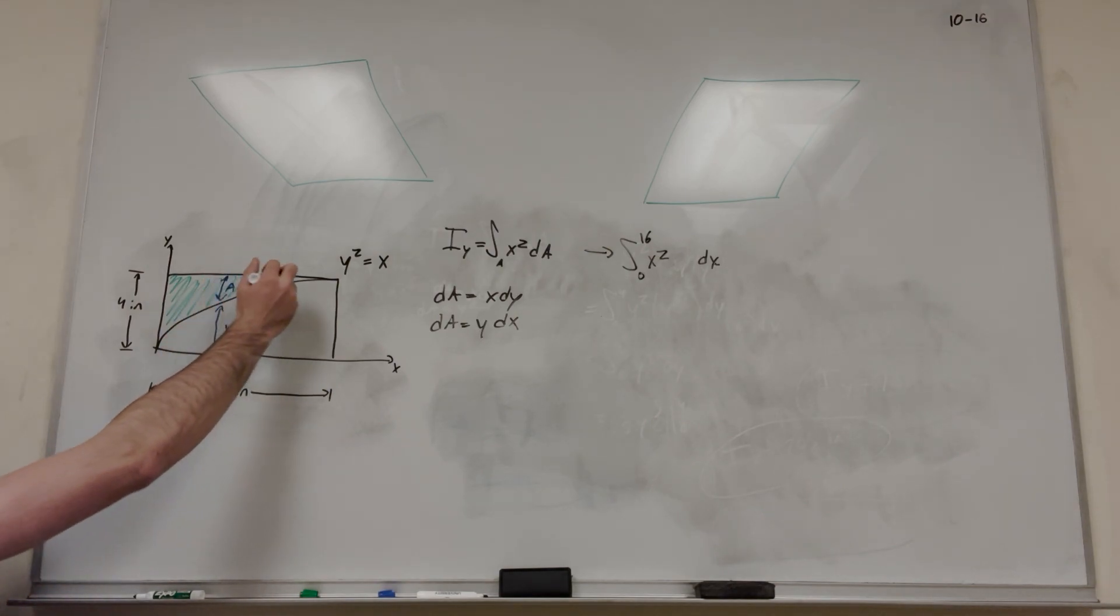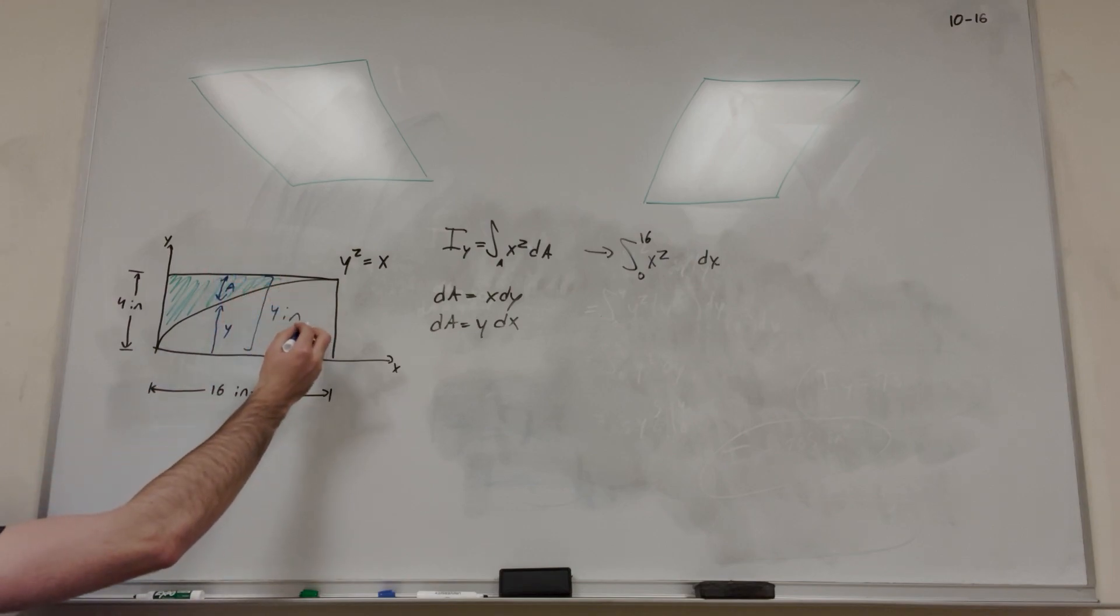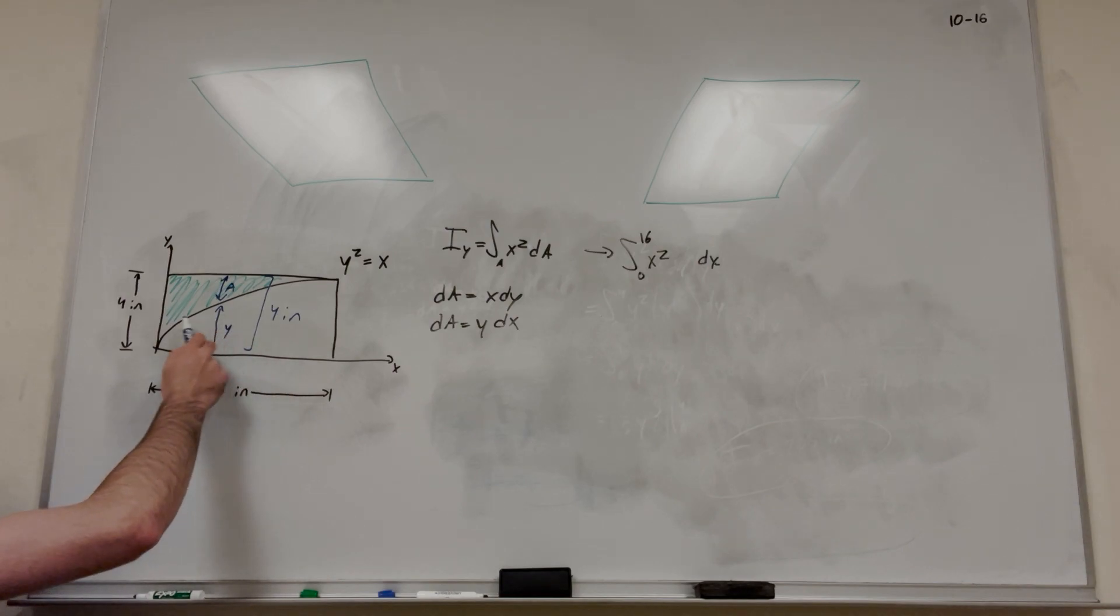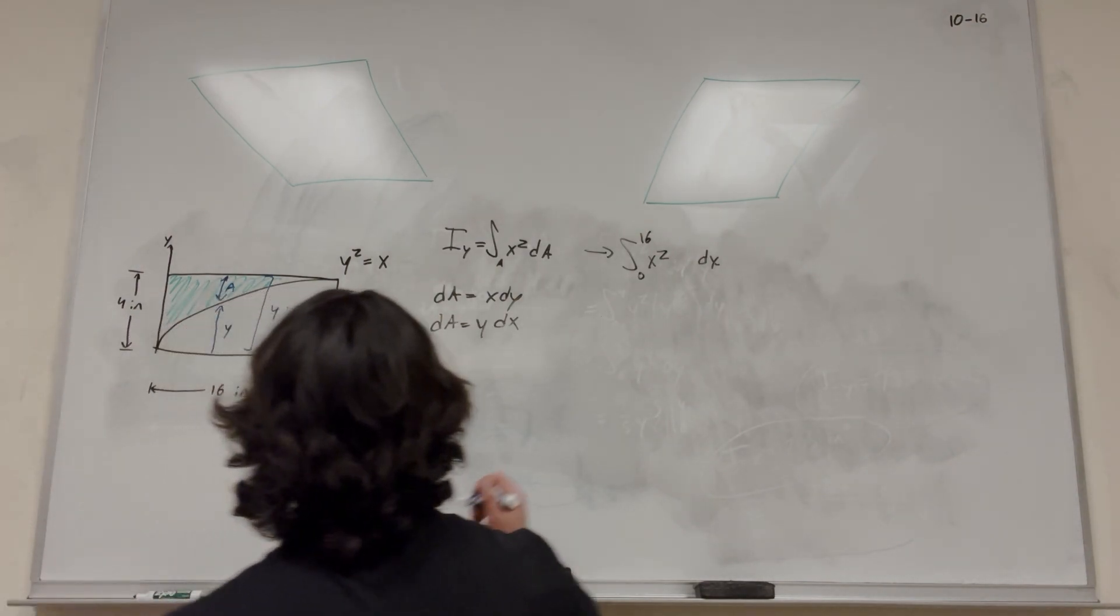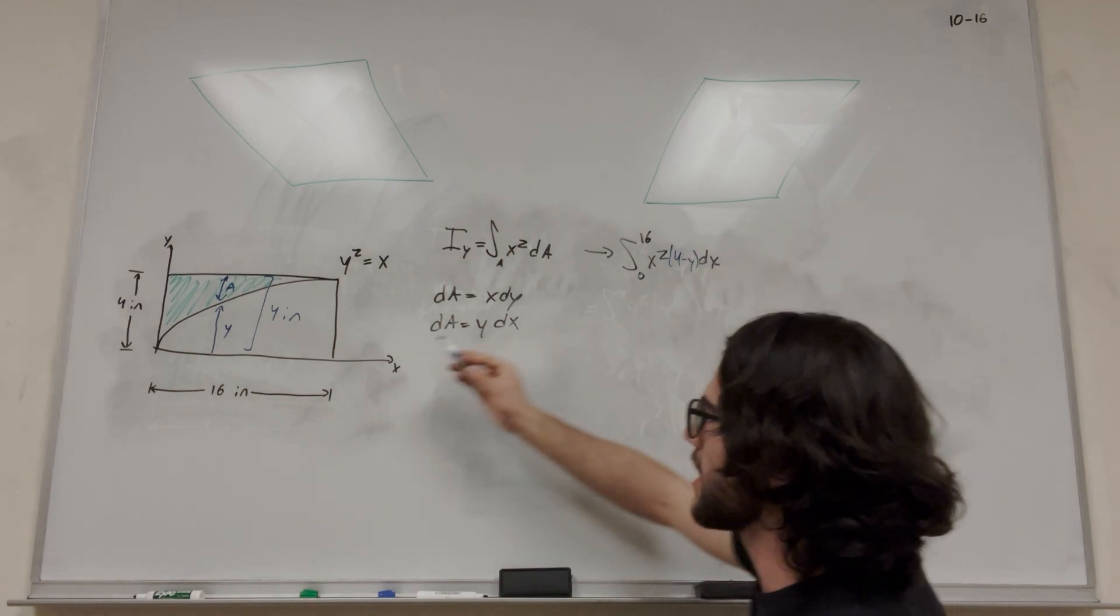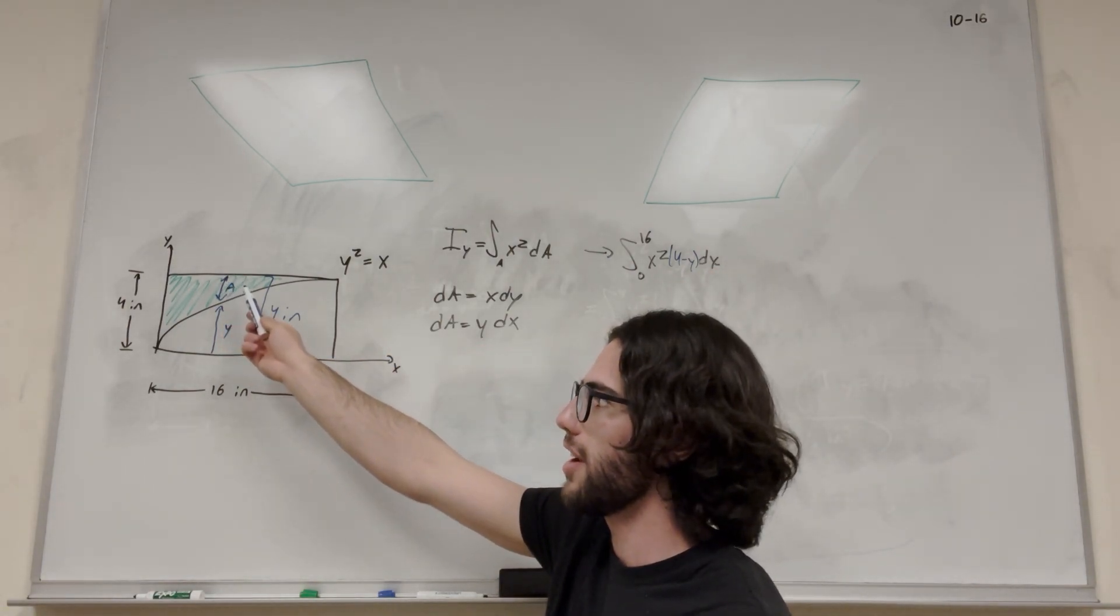Because this total height equals 4 inches. We want to find this area, and we know what y is. y is defined by this function here. So we want to find this equals 4 minus y. See where that's coming from? Our total height is 4, and then we're subtracting y to get this area. That's what we're trying to integrate for.